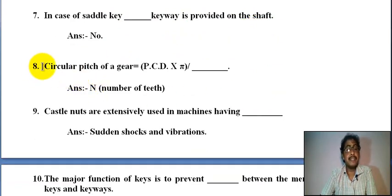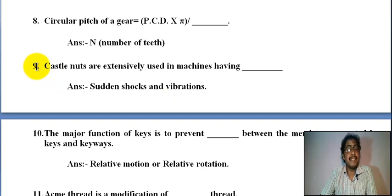Number eight: circular pitch of a gear equal to PCD, pitch circle diameter, times pi by n, n means number of teeth. Number nine: castle nut are extensively used in machine having sudden shock and vibration.